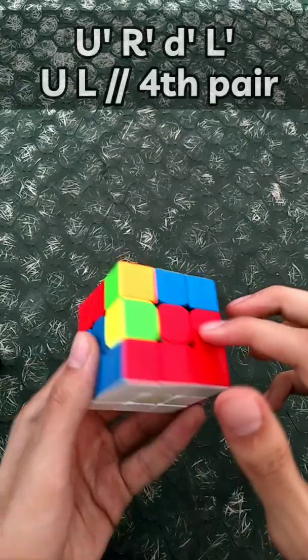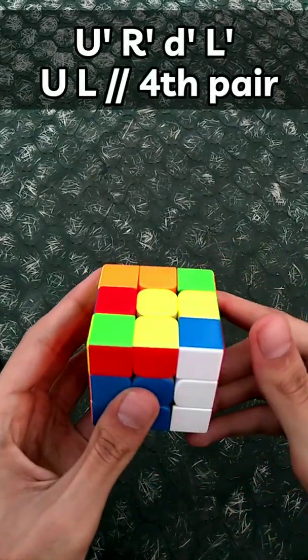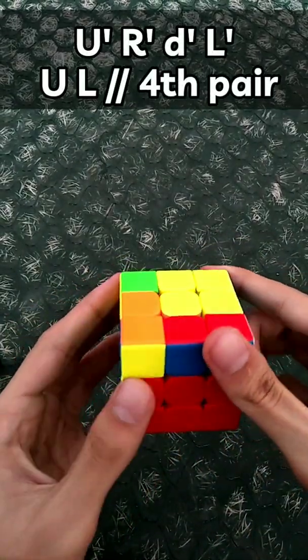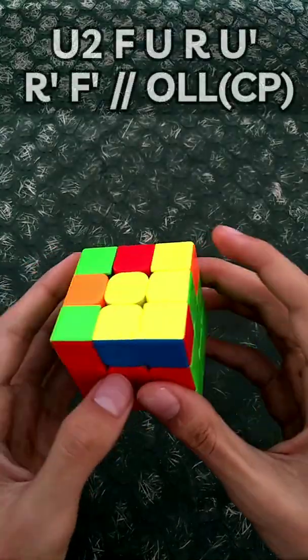Now he cancelled to solve this over here - he did an R2 and then paired them up while solving that. So a Y, D prime insert, which gave him a very easy L-shaped OLL.